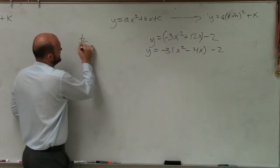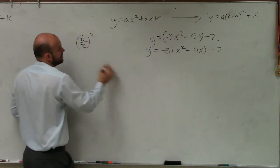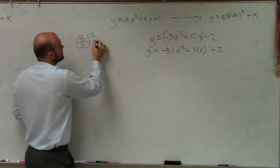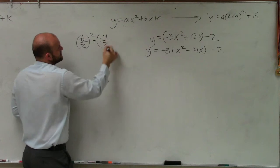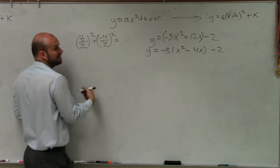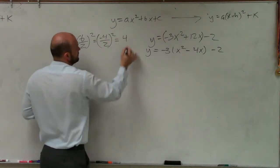So again, to do that, take b divided by 2 and square it. So b is going to be my middle term. Negative 4 divided by 2 squared. Negative 4 divided by 2 is negative 2. Negative 2 squared is 4.